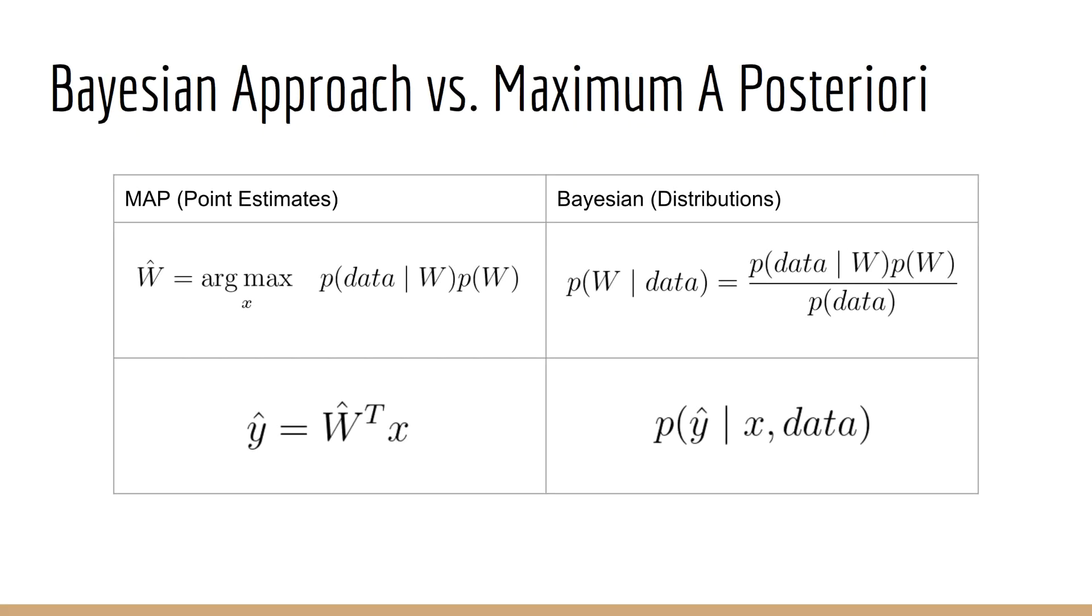So to summarize what we've just learned: During the learning process, classical machine learning tries to find a point estimate for the model parameters, which we call W hat. This accounts for the training data only, but it does not account for our prior knowledge. The Bayesian method accounts for both the training data and our prior knowledge.